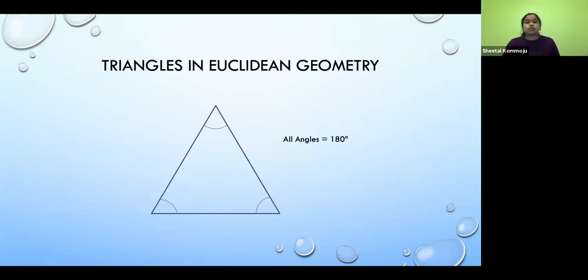So now we're going to move on to triangles in Euclidean geometry. So here we have three straight lines all connected to make a triangle. And if I were to take the sum of all three of these angles, they would be equal to 180 degrees.